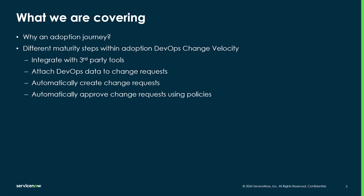The steps I'll cover are: connecting with third-party tools to import DevOps data, attaching this data to change requests, automatically creating change requests — both with and without pausing your pipeline — and automating change approval using policies. Let's jump in.